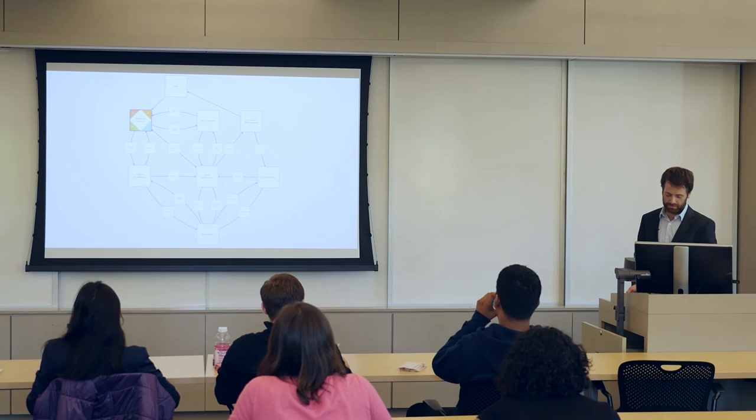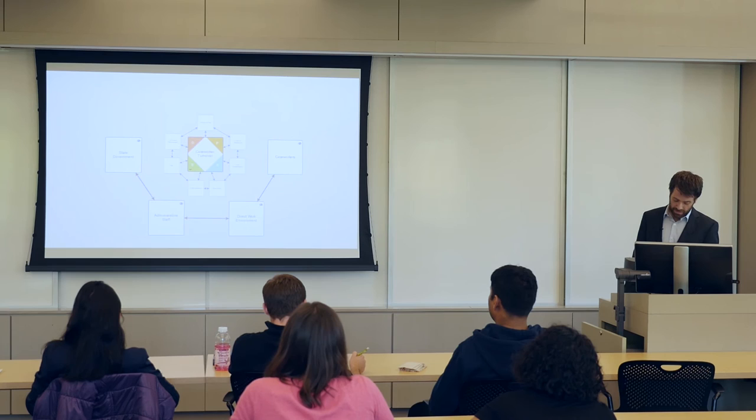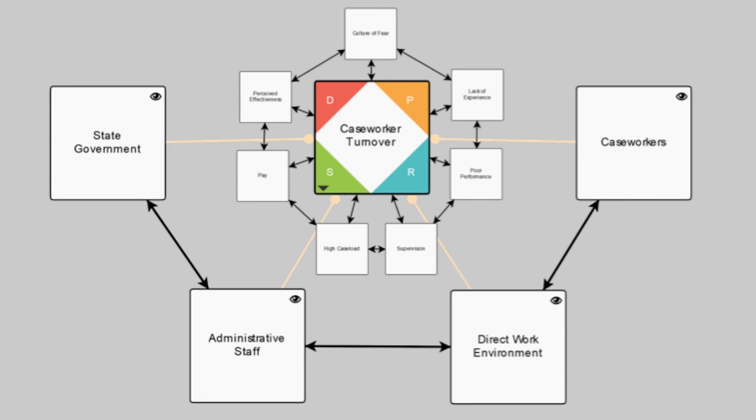The web of interconnected issues can be more simply visualized as that. Each piece contributes to turnover and each is caused either directly or indirectly by turnover. Each is a side to the wicked problem. But these problems don't exist in a void. They involve multiple actors in a cycle of processes that make up casework.